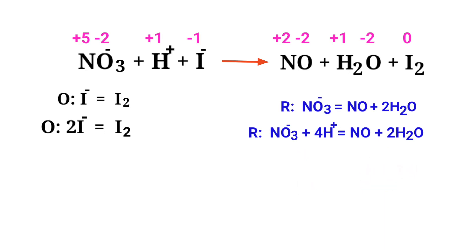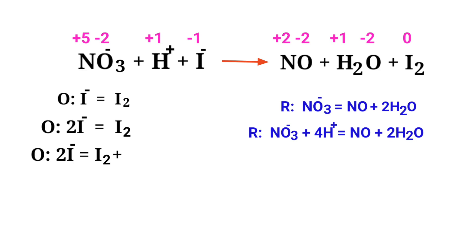For a redox reaction, the sum of charges should be equal on both sides. In the oxidation half reaction, both sides are not equal. To make them equal, you should add electrons — you cannot add protons. Add two electrons to the right side to make both sides equal to minus two. Now the charges are balanced in the oxidation half reaction.